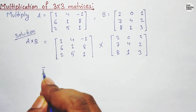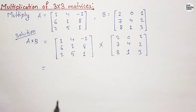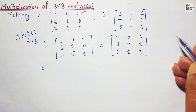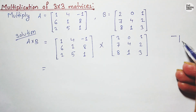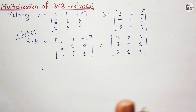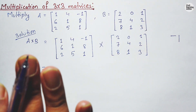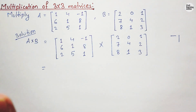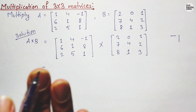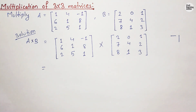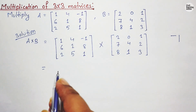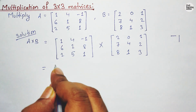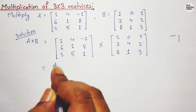Now what we will do while multiplying: we need to multiply a row with the elements of a column of another matrix. So a row of one matrix will get multiplied with the elements of a column of another matrix.